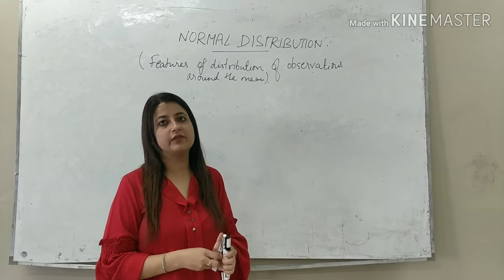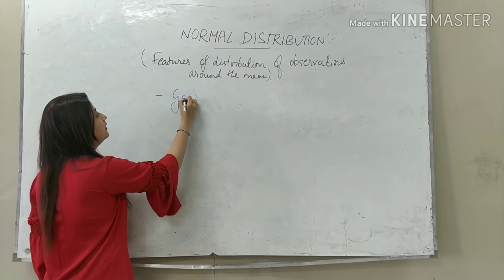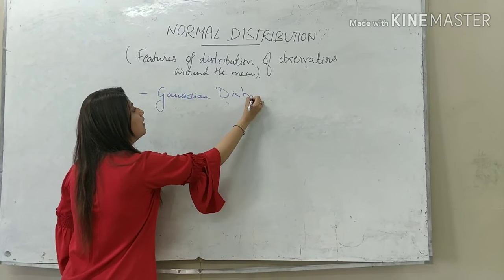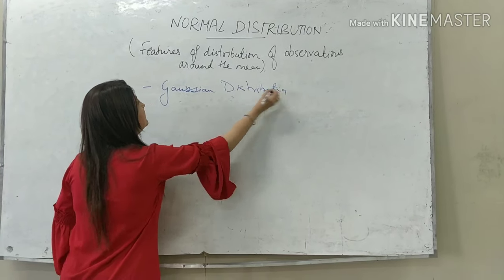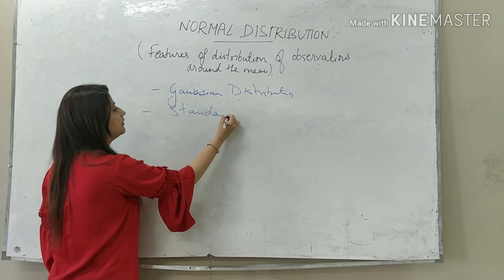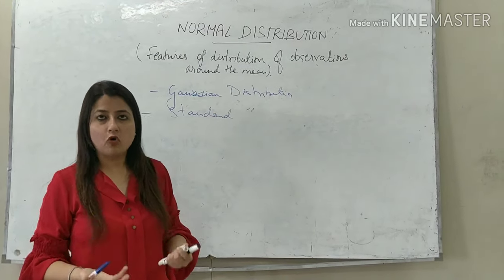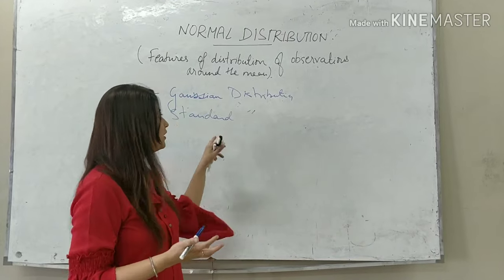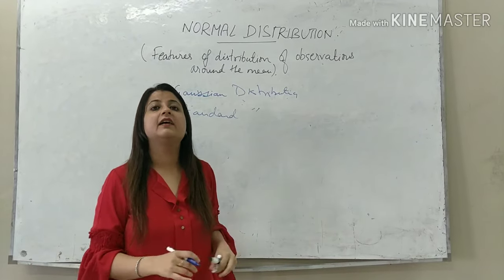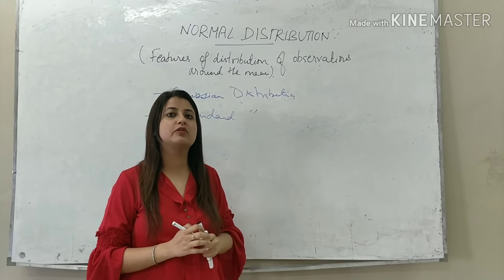There are other terms for Normal Distribution. It is also called Gaussian Distribution and also called Standard Distribution. This was named after Carl Gauss, who was a mathematician. So if you see terms like Gaussian or Standard, don't get confused — it is Normal Distribution only.